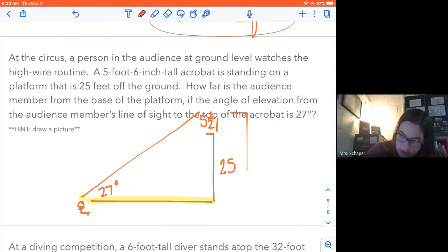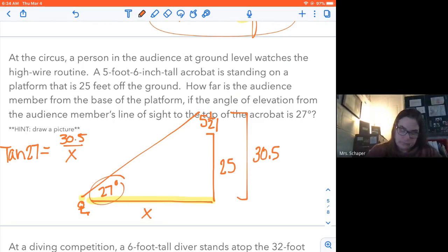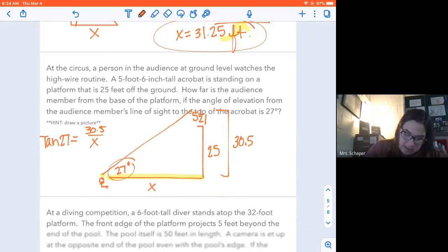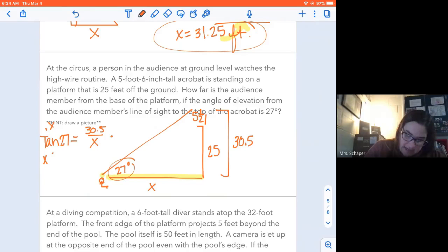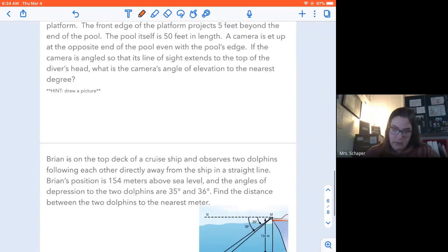All right. So I've got that this total is 30.5. And I want to figure out this. So if I'm going to use the angle 27 opposite over adjacent, the tangent of 27 is equal to opposite over adjacent. So what I'll probably do is multiply both sides by X. So X times the tangent of 27 is equal to 30.5. And I'll divide both sides by the tangent of 27. And so the audience member is 59.86 feet away. All right. A couple more here.